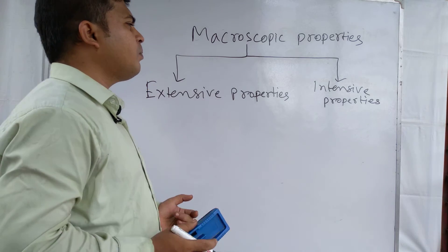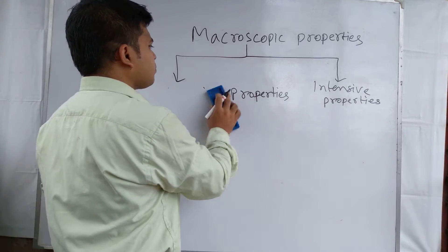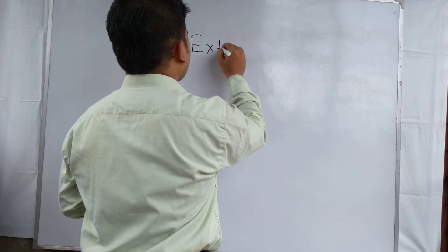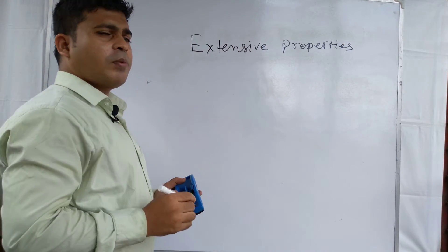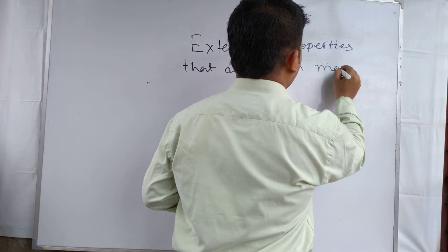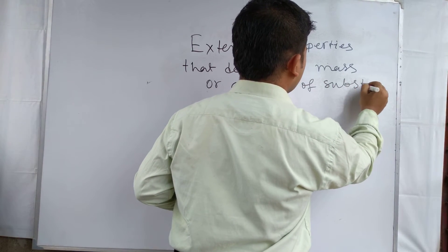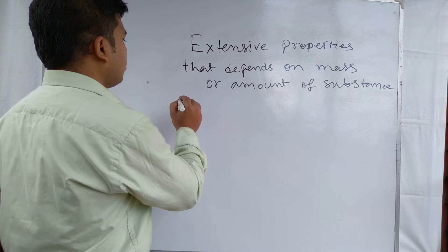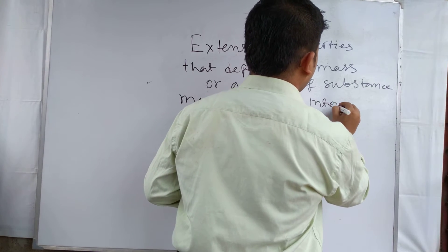We need to understand the definition of and difference between extensive and intensive properties. Extensive properties are those properties of the system that depend on the mass or amount of substance. Examples of extensive properties include mass, volume, and internal energy.